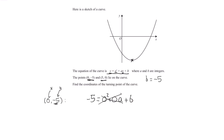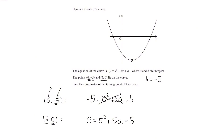Now we do the same thing for the second point on the curve. We know that (5, 0) lies on this curve, so when x is equal to 5, y is equal to 0. So we have 0 = 5 squared plus 5a plus b. We've already found b to be −5, so we write −5. Simplifying gives 20 + 5a = 0, so −20 = 5a, and dividing both sides by 5 gives a = −4.